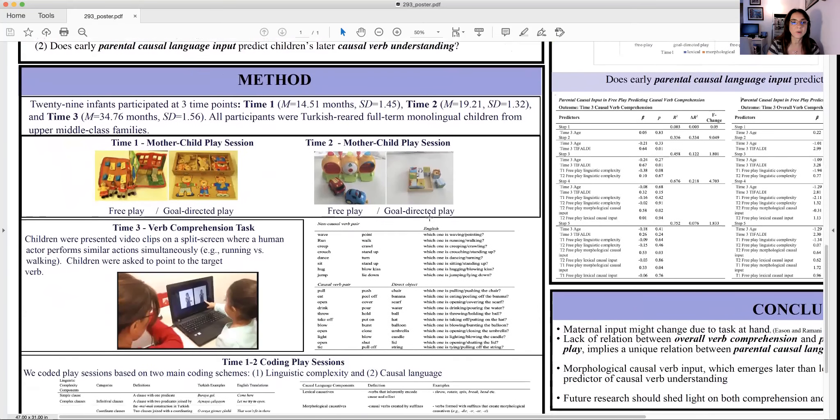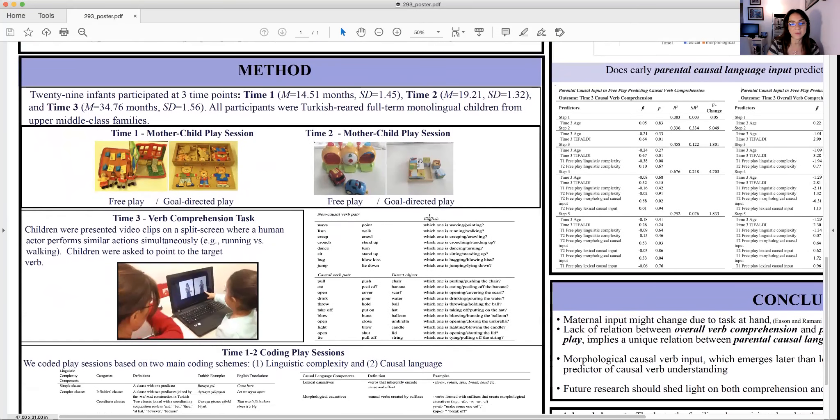In our method, this is a part of a longitudinal study and there are three time points. 29 infants participated at three time points. At time one they were around 14 months of age, then 19 months, and 34 months of age on approximate average.